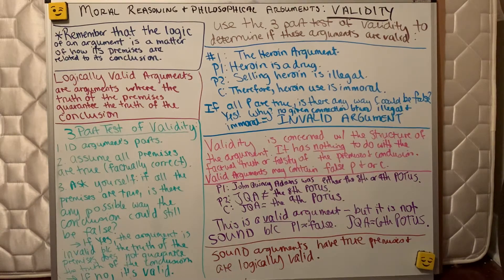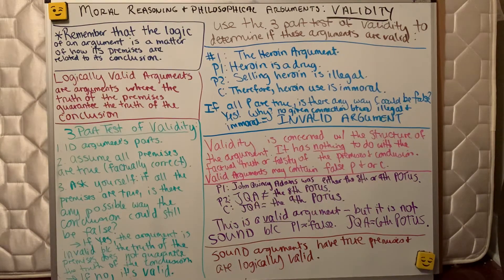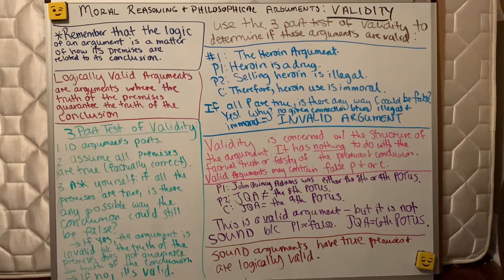Why? There's no given connection between illegality and immorality. Remember that at the beginning of the class, we talked about what ethics are and what they're not, and we said that law is not ethics. There are times when you can do things legally that people would consider immoral, and there are times when things that are moral — the right thing to do — are illegal. So we have to keep in mind that ethics are separate and distinct from the law. Without additional premises connecting drugs or illegality to immorality, this argument, as it is, is invalid.